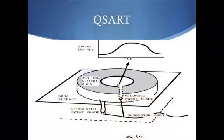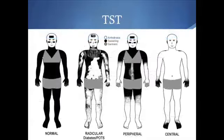Sweating can also be tested in several ways. This is kind of a sauna — we cover the patient with an orange powder, and when they sweat, they will turn that powder into a purple color. We then see what areas of the body have produced sweat and which have not. This is also mediated by the sympathetic nervous system. So we think that music is an activator of the autonomic nervous system.